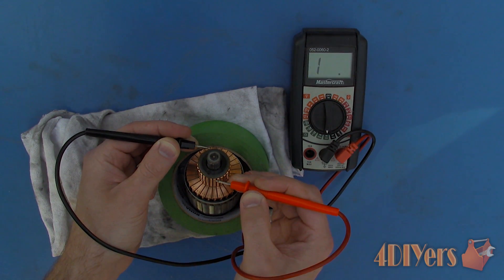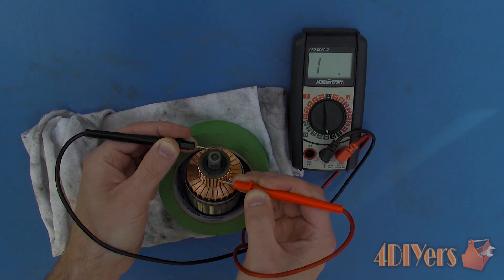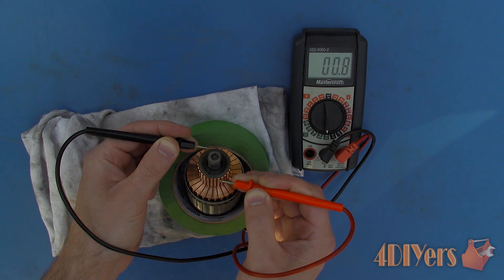If the armature fails any of these tests then it will need to be replaced. Sometimes you can have them rebuilt but it's usually cheaper to purchase a replacement.